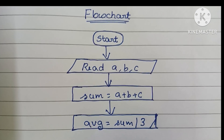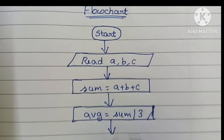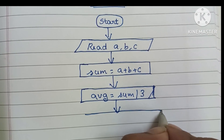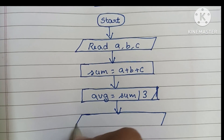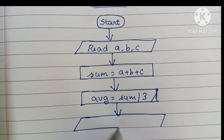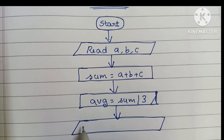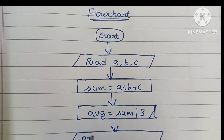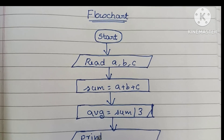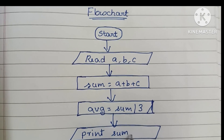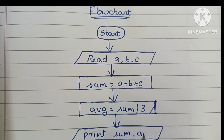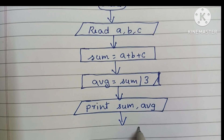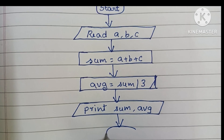Next, we print the output values. Output values are written within a parallelogram shape. Within it we write: print sum and average. Then we stop the algorithm using the stop statement written in an oval shape.